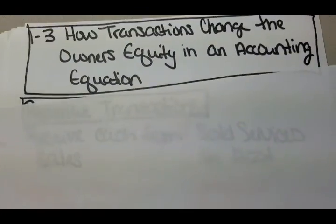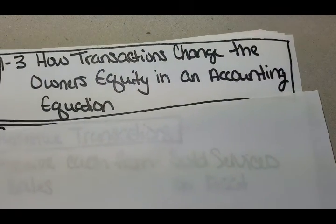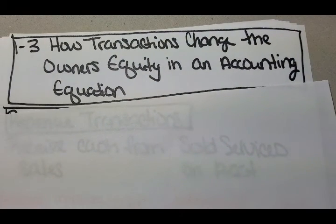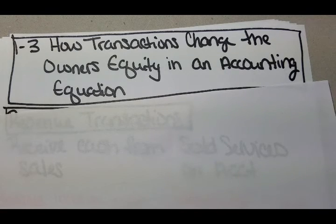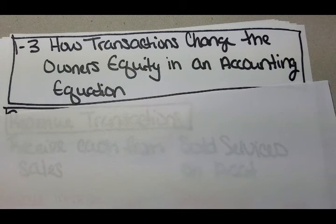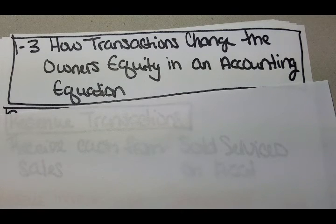Welcome back. This is Accounting 1, Chapter 1. Today we're working on Section 3: How Transactions Change the Owner's Equity on the Accounting Equation. Yesterday we talked about how transactions were going to change assets and liabilities. Today we're discussing the owner's equity.